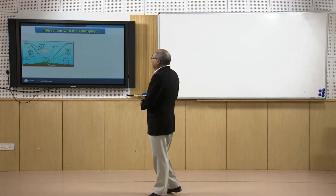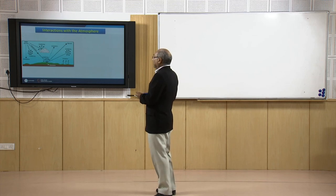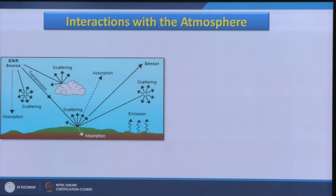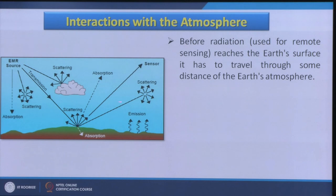There are a lot of scattering, absorption and other emission phenomena that occur. The EMR source might be directly absorbed, and there might be some scattering depending on the size of particles available. Transmission coming from solar radiation interacts with objects on the surface of the earth. Again there might be absorptions and scattering, and the return signatures going to the sensor are also absorbed or scattered due to the atmosphere. All these things keep happening and really affect the images acquired by the satellite.